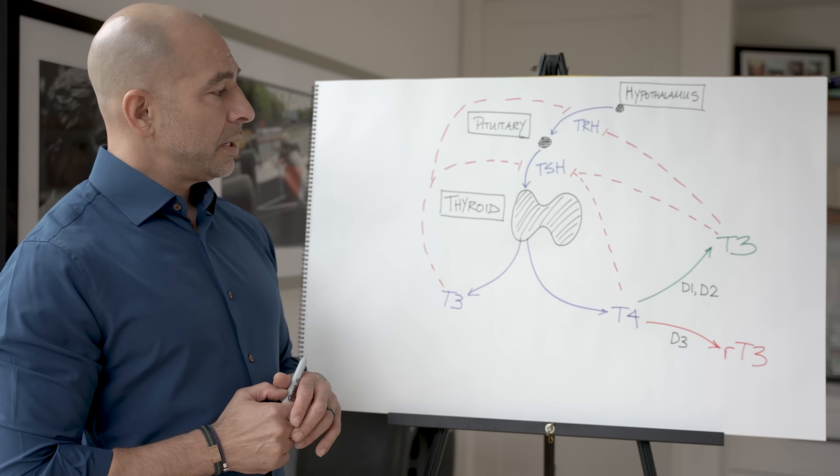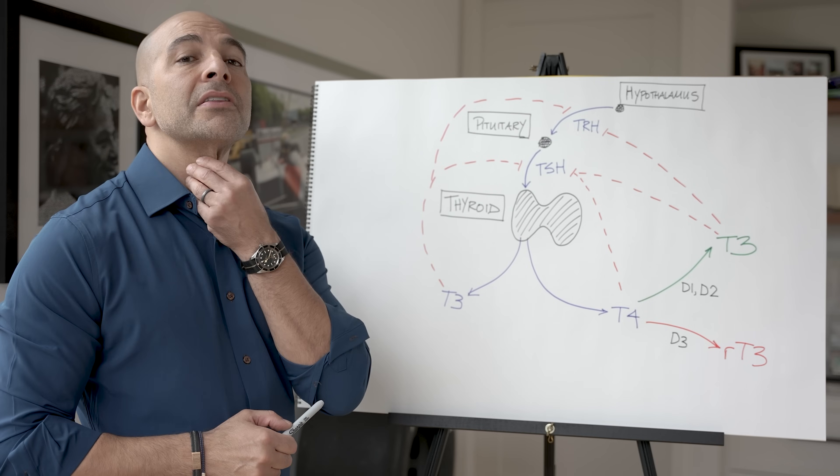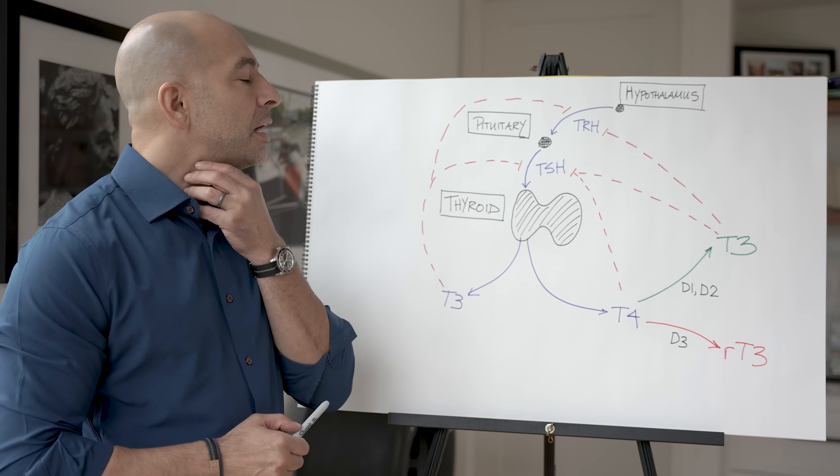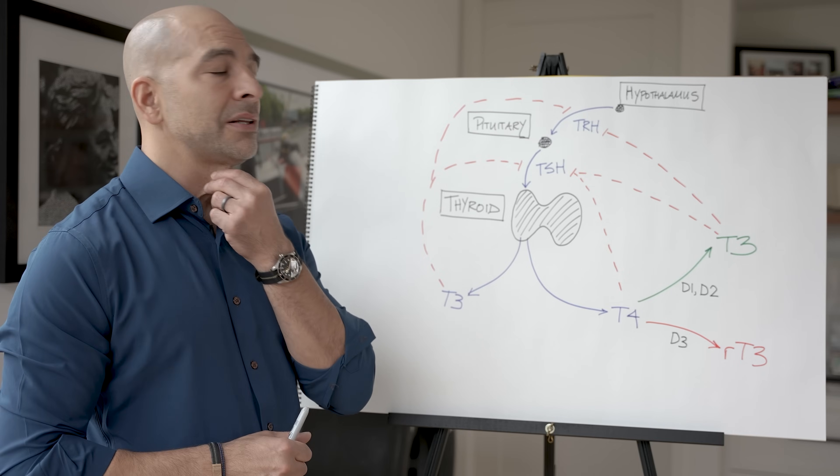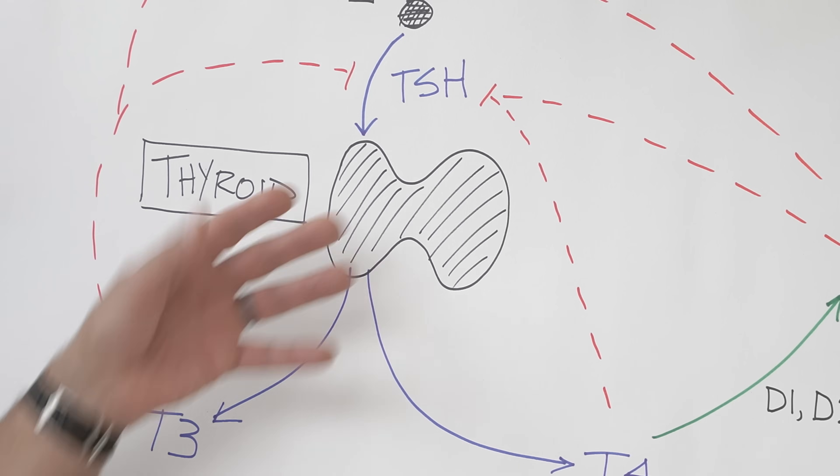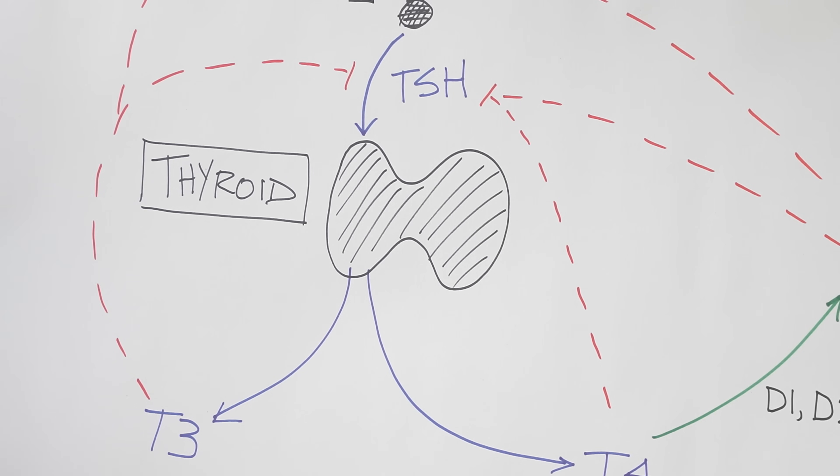You have the thyroid gland, which sits in front of your larynx. You can actually feel the thyroid gland, and it's shaped as a shield, which is how it gets its name. The thyroid gland is regulated directly via a hormone called TSH.